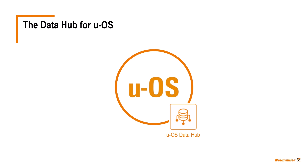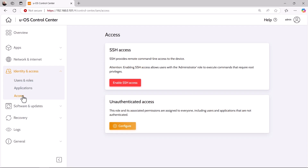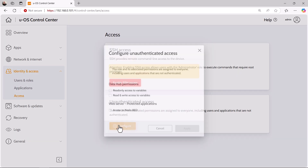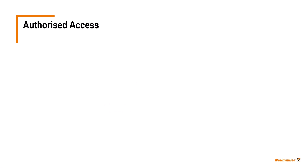Hello and welcome to the second part of our brief introduction to the UOS Data Hub. In the first part of this tutorial series, we discussed the variable HTTP API of the UOS Data Hub and did a live demonstration of its usage. Here we chose the quick and dirty way and granted the UOS device unauthenticated access to the Data Hub. However, this procedure is not secure and is only permitted for test purposes. In this tutorial, I will show you how authorized access to the Data Hub works.